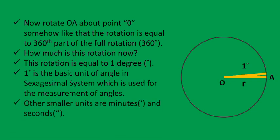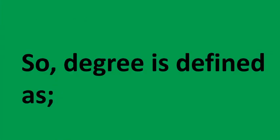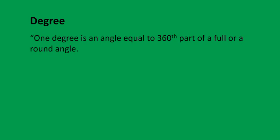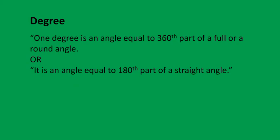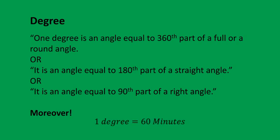1 degree is the basic unit of angle in the sexagesimal system, which is used for the measurement of angles. Other smaller units are minutes and seconds. A minute is the 60th part of a degree, and a second is the 60th part of a minute. So degree is defined as: 1 degree is an angle equal to the 360th part of a full or round angle, or the 180th part of a straight angle, or the 90th part of a right angle. Moreover, 1 degree equals 60 minutes, and 1 minute equals 60 seconds.